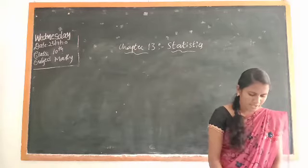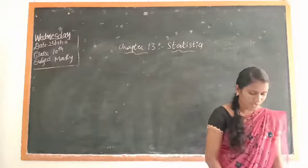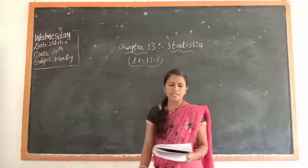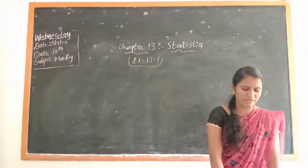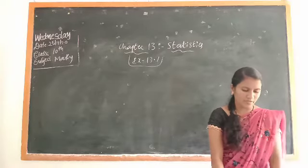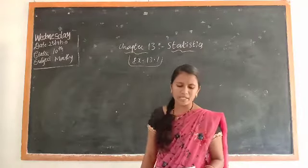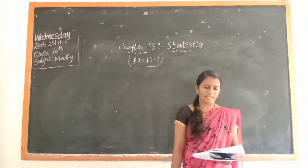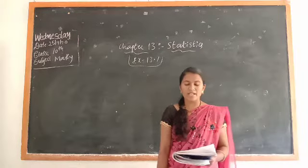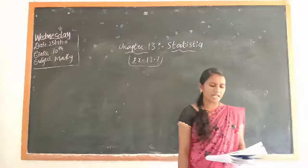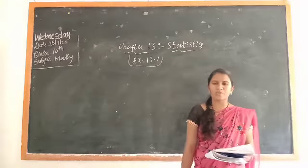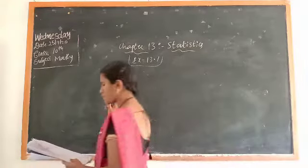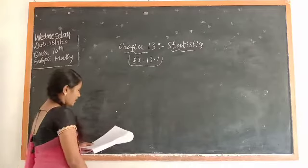Now we will have to take the exercise part. Exercise 13.1, first portion here. A survey was conducted by a group of students as part of their environment awareness program, in which they collected the following data regarding the number of plants in 20 houses in a locality. Find the number of plants per house. You have to calculate the number of plants per house total mean, how much you have to calculate. Here we are given the chart number of plants from 0 to up to 40. They are given and also number of houses. Here number of houses is the frequency. Now write the chart. Which method you use for finding mean and why you have to write.